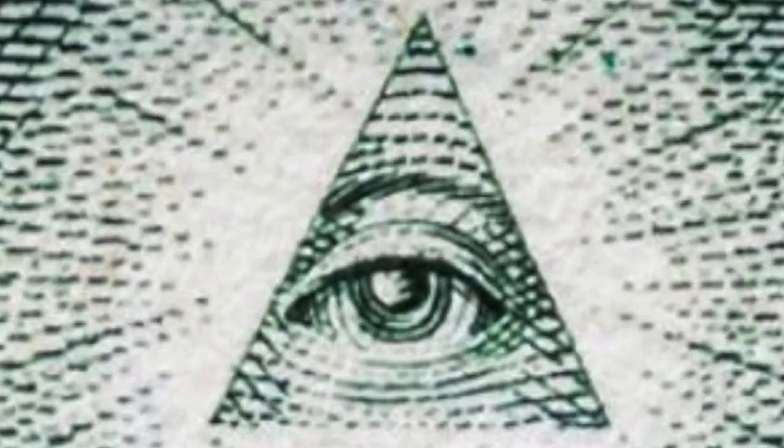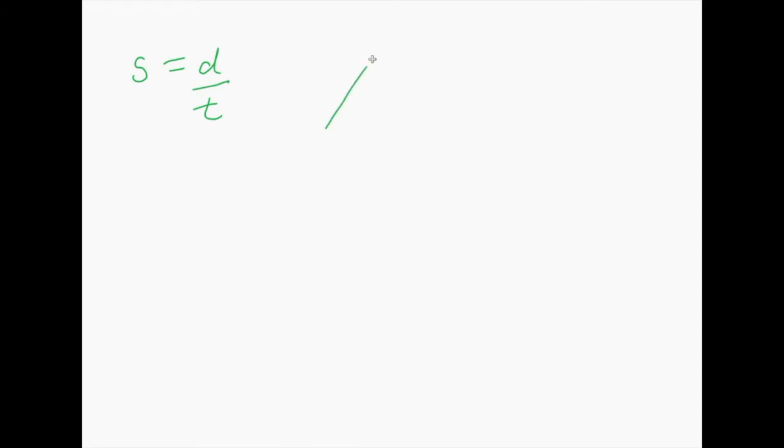I'm going to show you how to rearrange formulas using the magic triangle. Say you had speed equals distance divided by time. The first thing is draw your magic triangle — create a top shelf and then this big bit down here, split into two bits by drawing a multiplication sign. So I've created three corners.